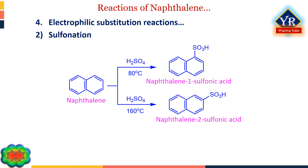Sulfonation of naphthalene by concentrated sulfuric acid at 80°C gives naphthalene-1-sulfonic acid. The same reaction carried out at a higher temperature of 160°C gives naphthalene-2-sulfonic acid as the predominant product. The 1-isomer is the more readily formed and is stable at 80°C; however, at 160°C, naphthalene-1-sulfonic acid is desulfonated and there is sufficient energy to convert naphthalene into the 2-sulfonic acid, which is stable even at the higher temperature.